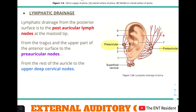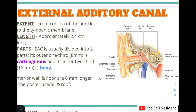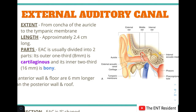Next is the second part of the external ear: the external auditory canal (EAC). Its extent is from the concha on the lateral side to the tympanic membrane on the medial side. Its length is approximately 2.4 centimeters. The EAC can be divided into two parts: the outer one-third, which is the cartilaginous portion, and the inner two-thirds, which is the bony portion.